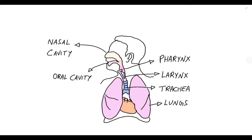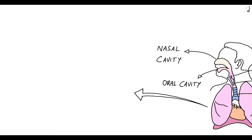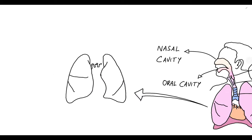The diaphragm is a dome-shaped muscle which serves in breathing. Now let us take a closer look at the lungs anatomy.